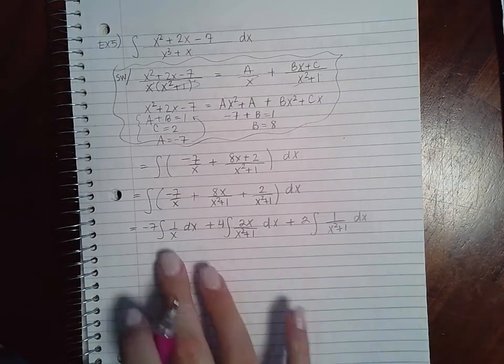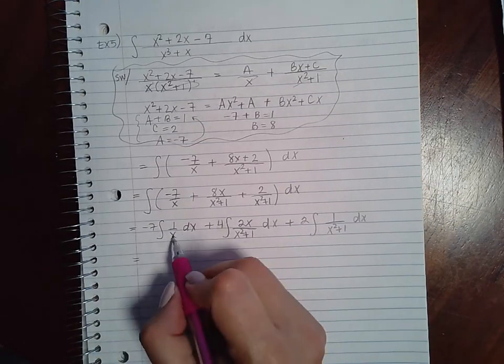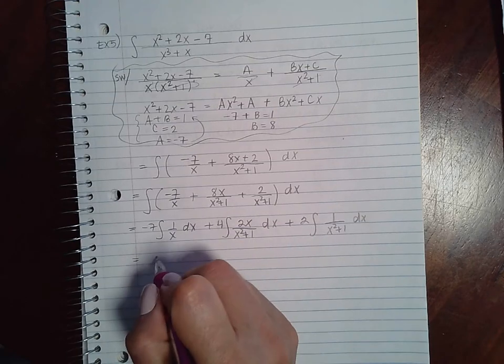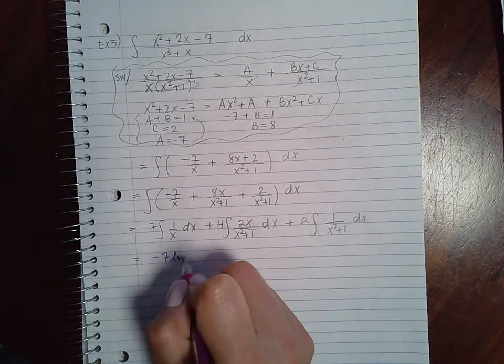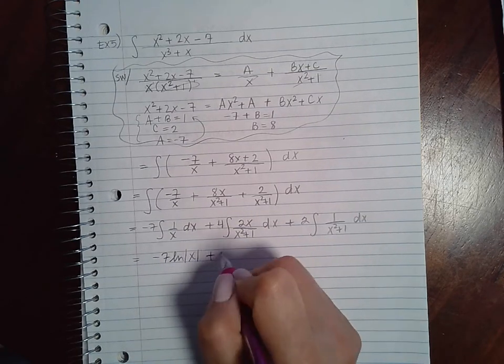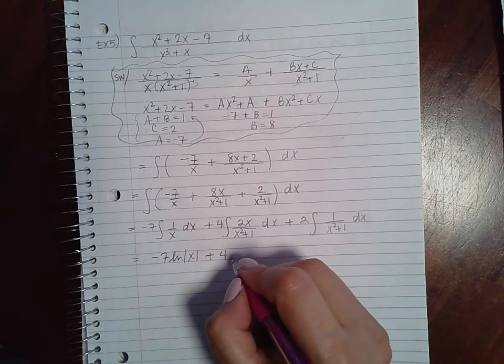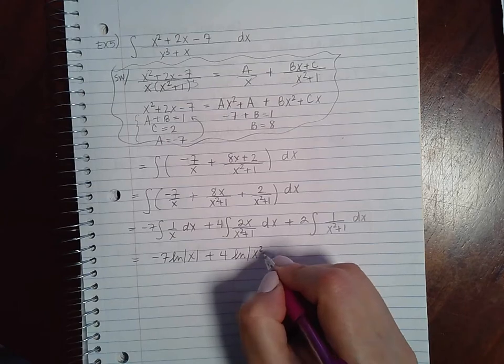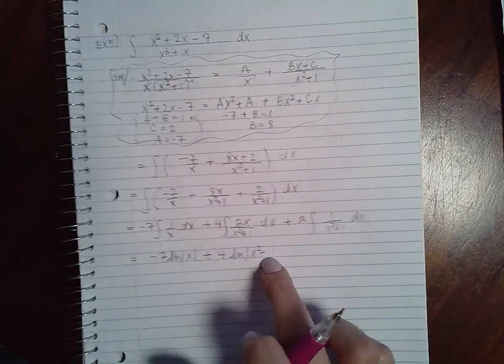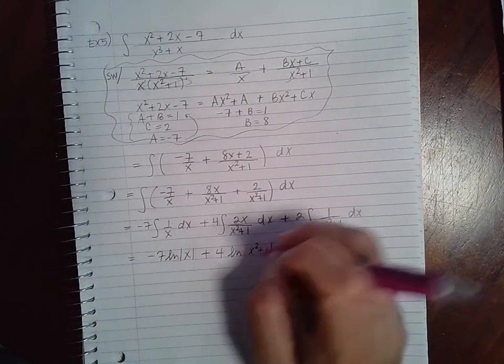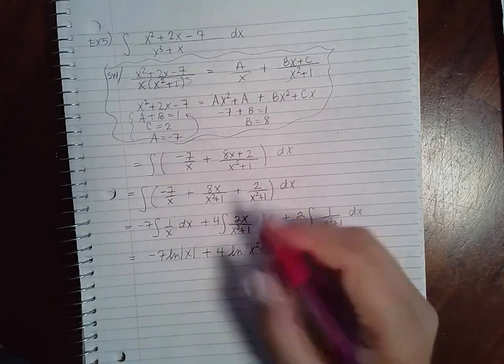Okay, so then here I end up with x underneath its derivative 1, so negative 7 ln of x. Here I end up with x squared plus 1 under its derivative, so I get the ln of x squared plus 1, which is always positive, so I don't necessarily need to have the bars on this one.